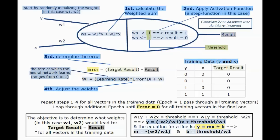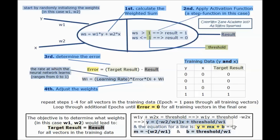The objective is to determine what values of w1 and w2 lead to the target result equaling the result for all vectors. Setting ws equal to the threshold gives: w1*y + w2*x = threshold. Solving for y gives y = (-w2/w1)*x + threshold/w1, so m = -w2/w1 and b = threshold/w1.